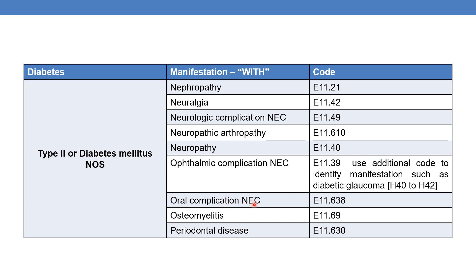For ophthalmic complication NEC, because glaucoma is not listed under 'with', you use E11.39 followed by the glaucoma code under H42. Whenever a patient presents with diabetic glaucoma, you must first code E11.39 and then follow with the respective glaucoma codes — you should not give glaucoma codes alone.